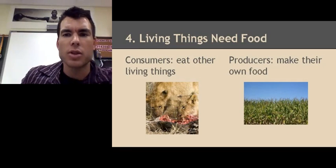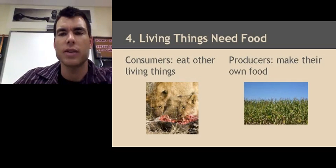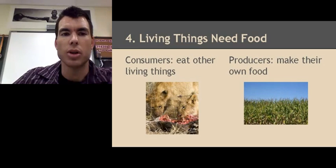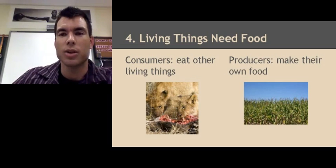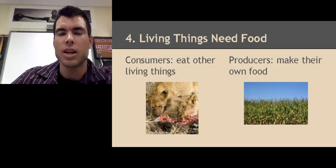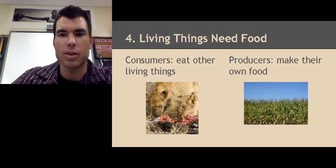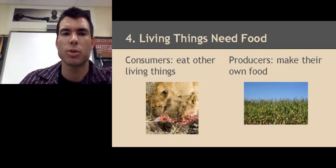Living things also need food. There are two ways living things get their food. Way one: you are a consumer — consumers eat other living things. Most people and animals are consumers; we go out and buy or hunt our food, but we're still eating other living things. The other way is being a producer — producers make their own food. Humans cannot make their own food, but plants make their own food through a process called photosynthesis. So you are either a consumer or a producer.